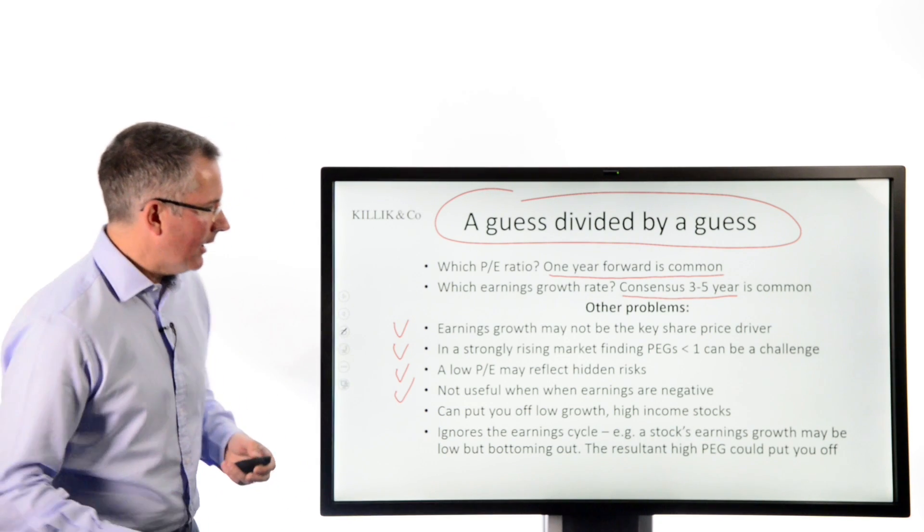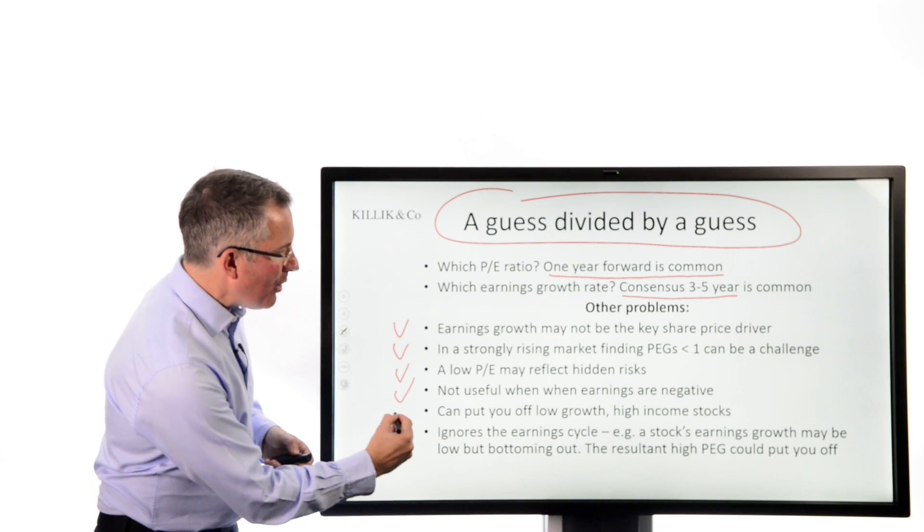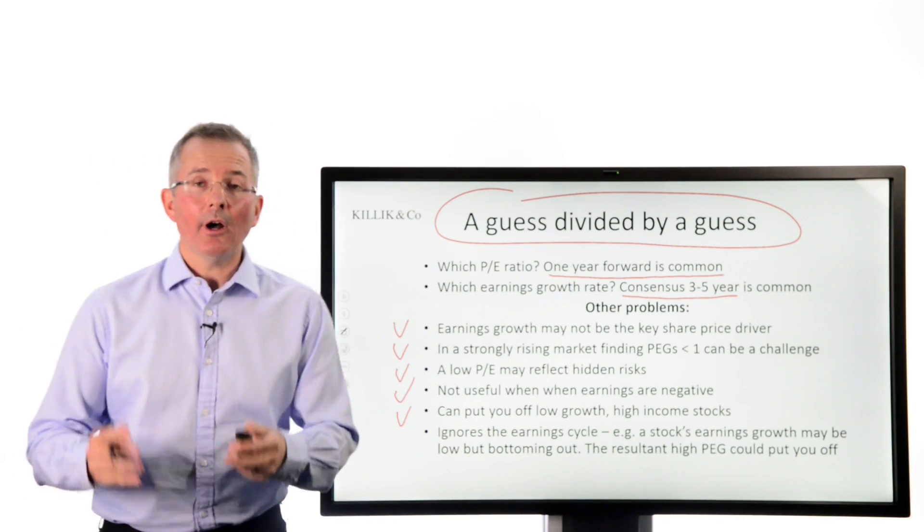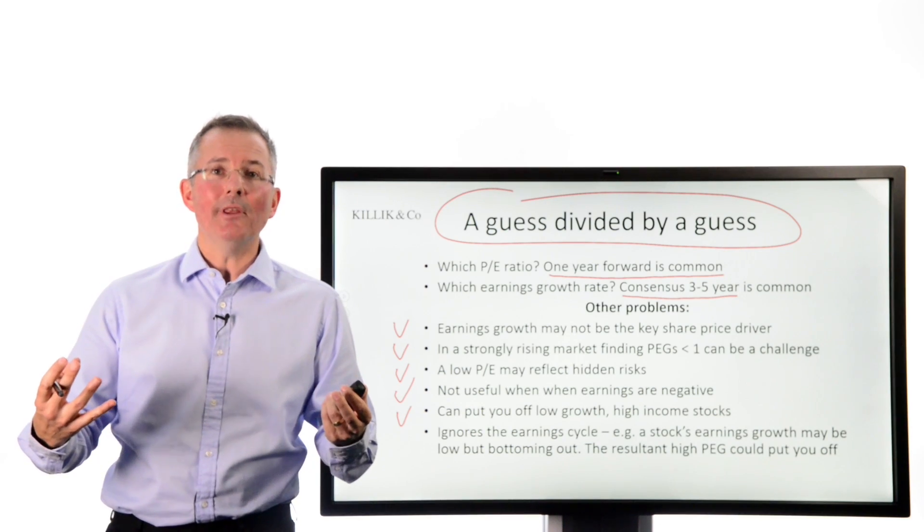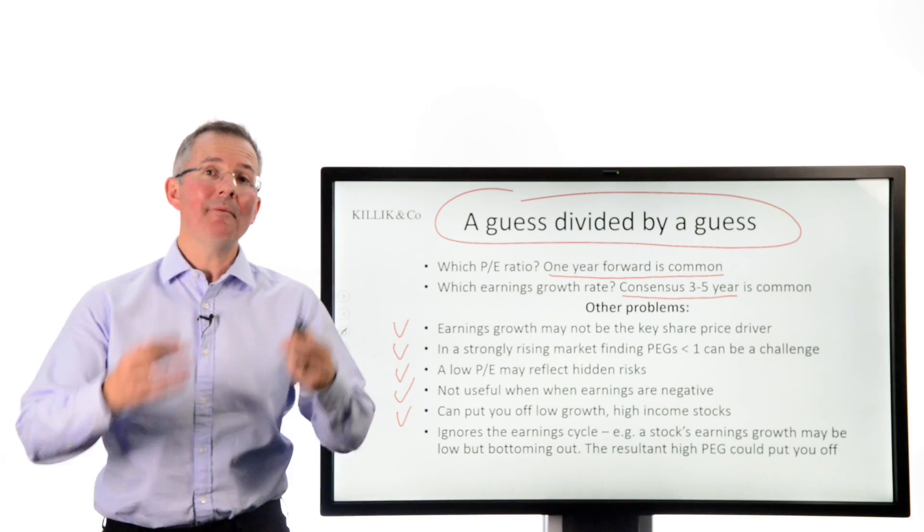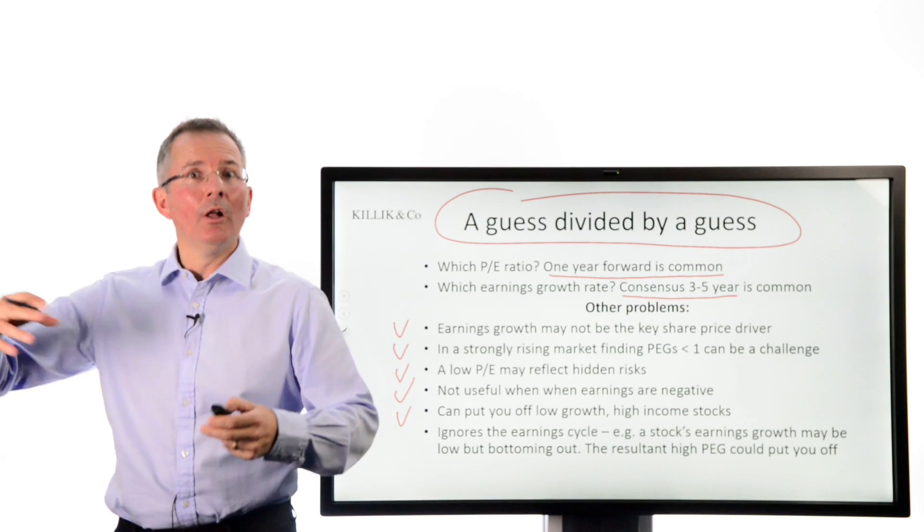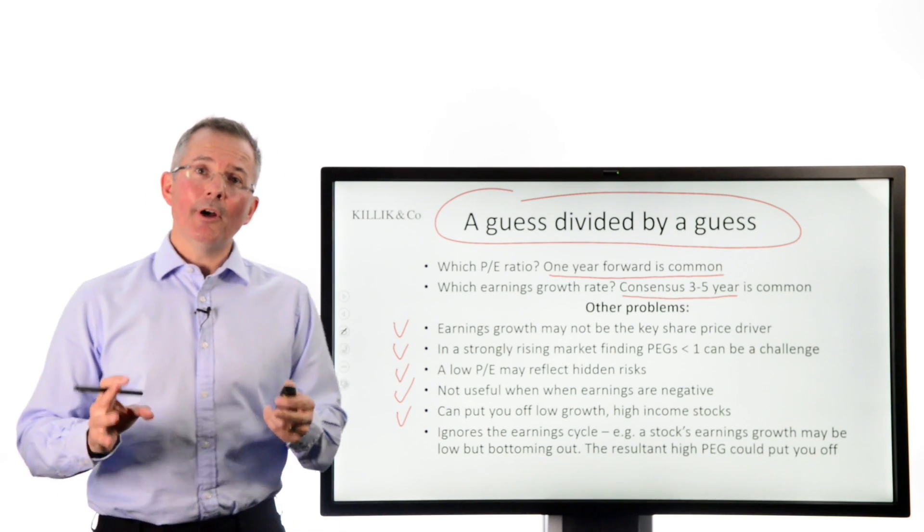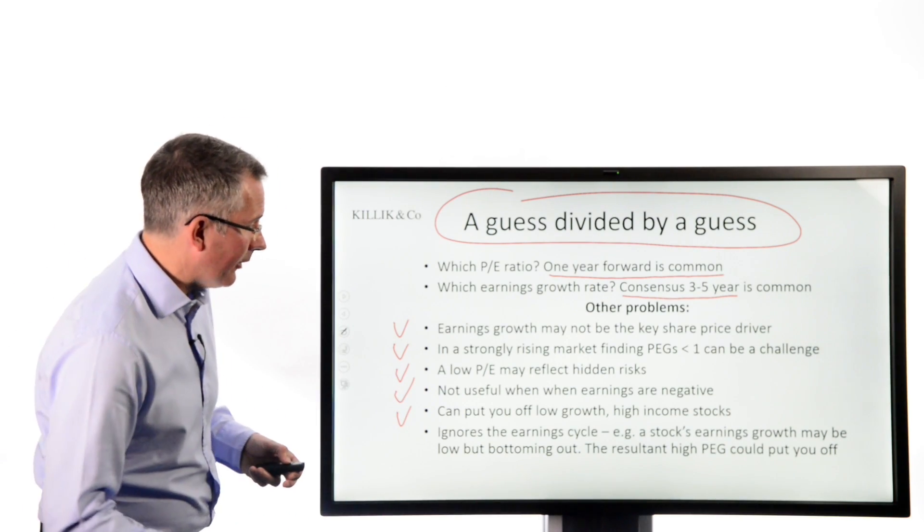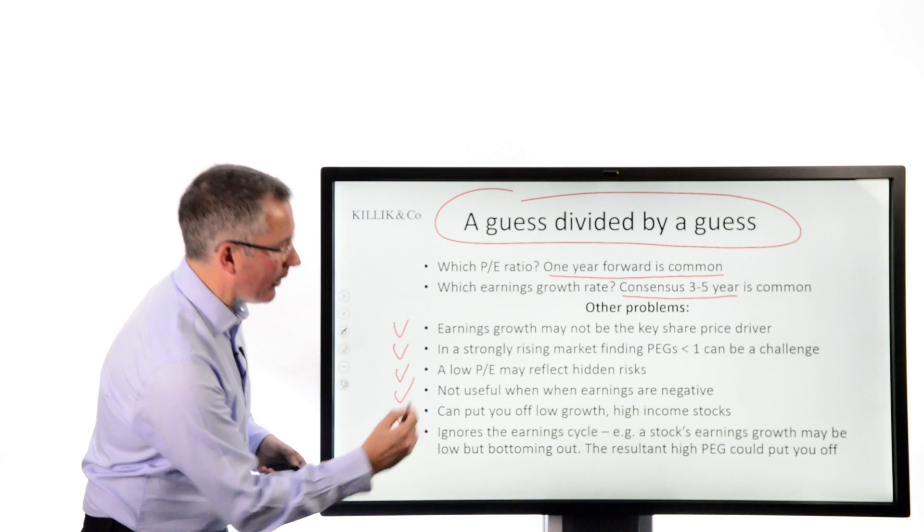It can put you off low growth, high income stocks. It doesn't really factor in the idea that some stocks are just semi-permanently low growth, but people buy them for income. They want dividends. They're not looking for earnings growth per se, and you might write off a load of stocks on that basis.